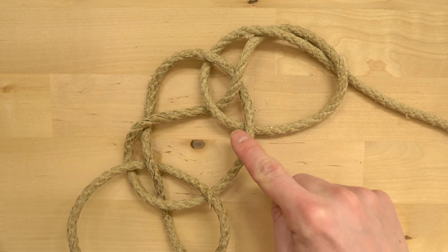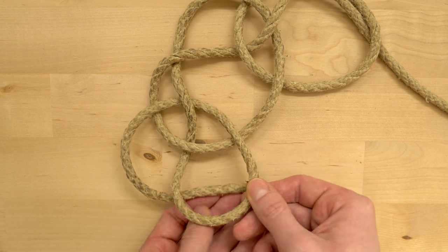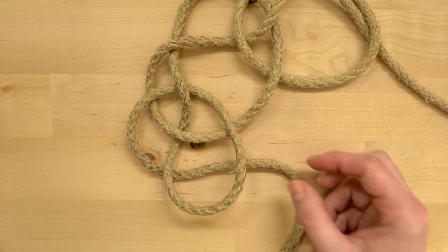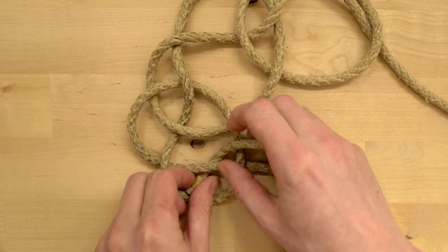We have two sections completed now and a new loop under which we again travel. Then go over, under, over in order to split your loop.